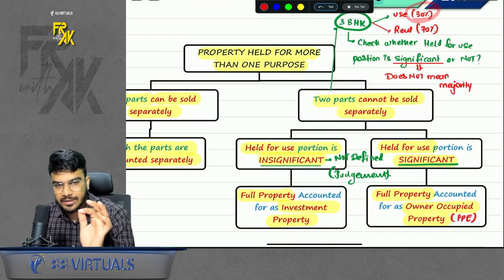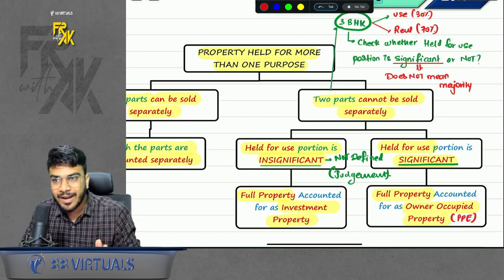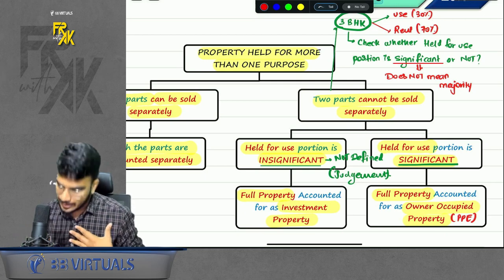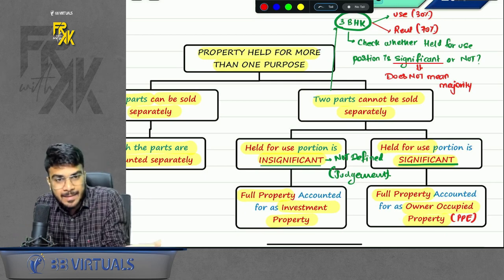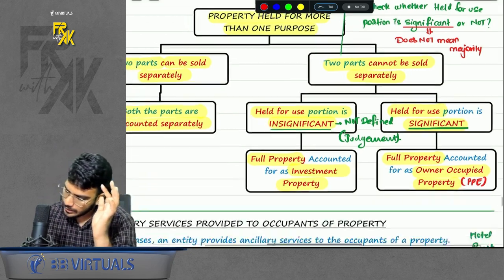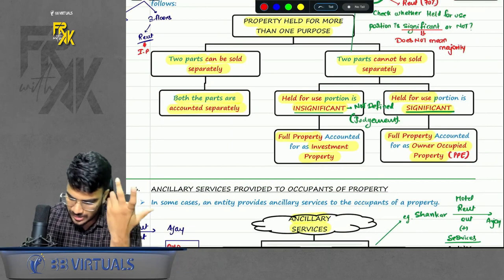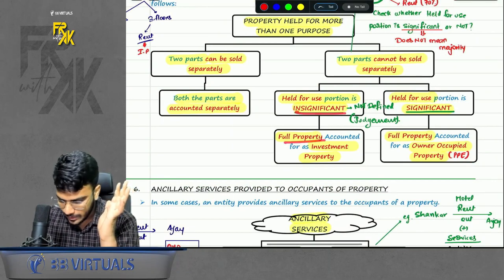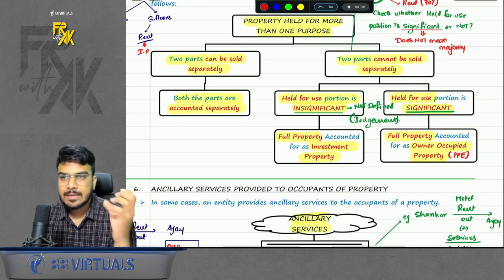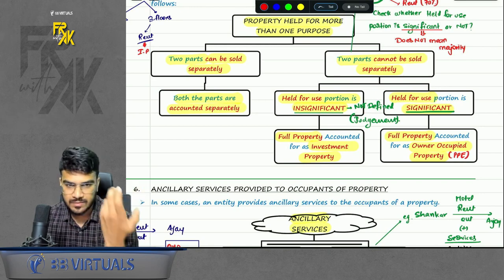Significant does not mean majority; significant means material. For example, 30% space in a flat can be significant. If the use portion is significant, the full property will be classified as PPE. If the use portion is not significant, the full property will be IP. The definition of significant is a matter of judgment — some portion might be significant for you but not for me.